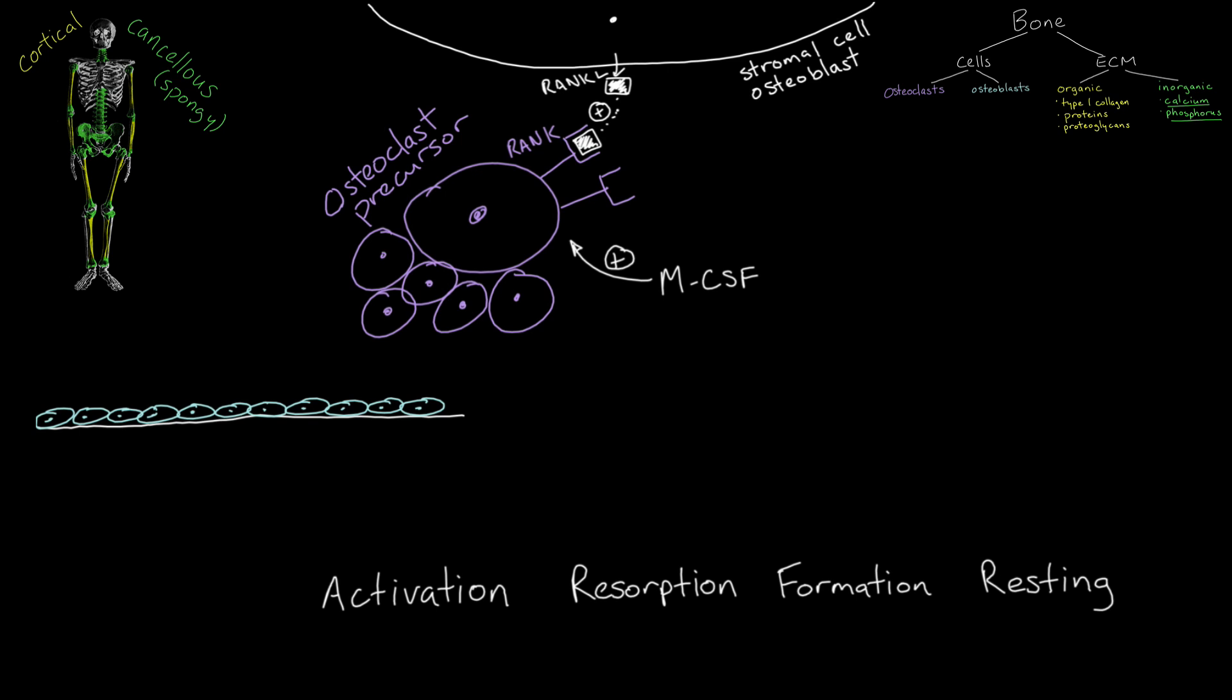Release of RANK-L, and thus the process of osteoclastogenesis, is stimulated by vitamin D, parathyroid hormone, interleukin-1, and prostaglandins. Under the influence of factors such as estrogen, stromal cells secrete a decoy receptor for RANK ligand called osteoprotegerin, or OPG, which will prevent differentiation to mature osteoclasts.